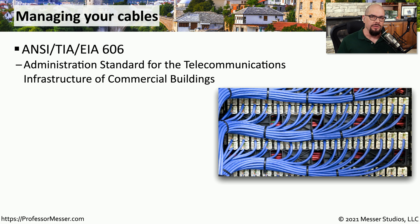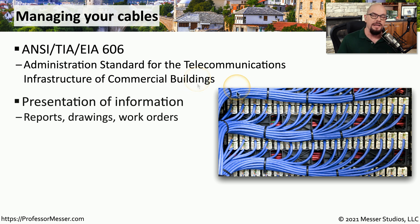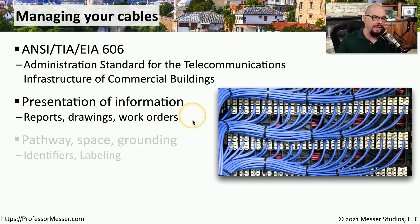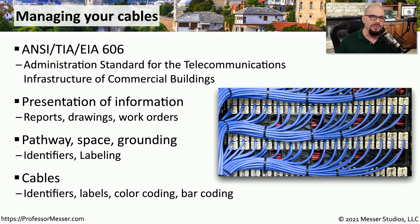As network professionals, not only are we documenting our switches and our routers, but we're also documenting all of the cables in our organization. Fortunately, there is a standard for documentation: the ANSI TIA EIA 606. It's the administration standard for the telecommunications infrastructure of commercial buildings. This can help you with best practices for creating reports, drawings, or work orders based on this cabling. You can also get an idea of how to document the pathways, the space, the grounding, and how to label all of these cables in your organization.